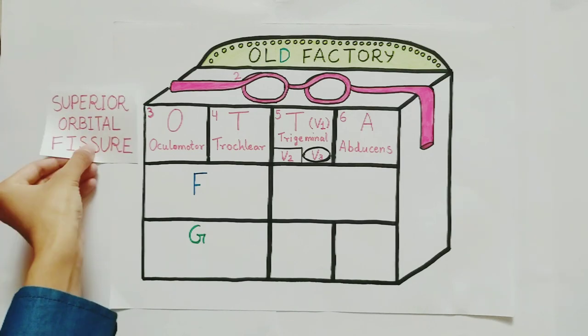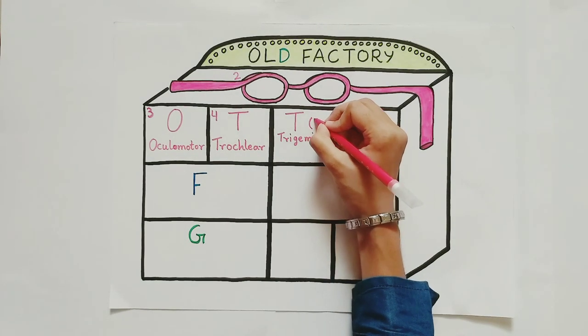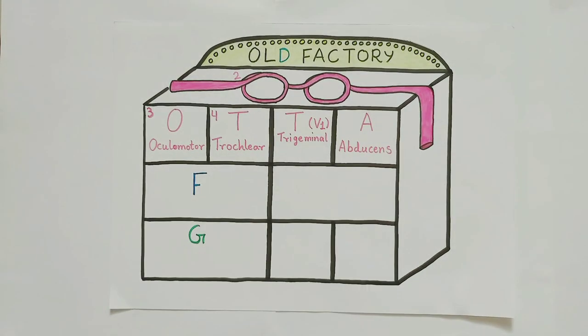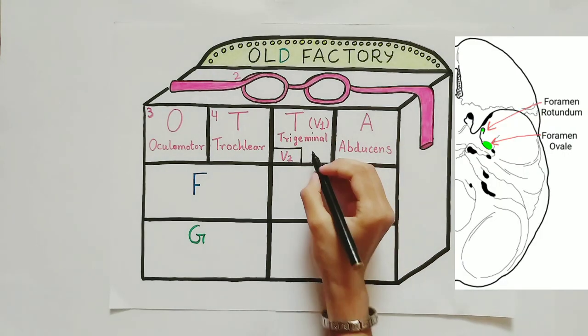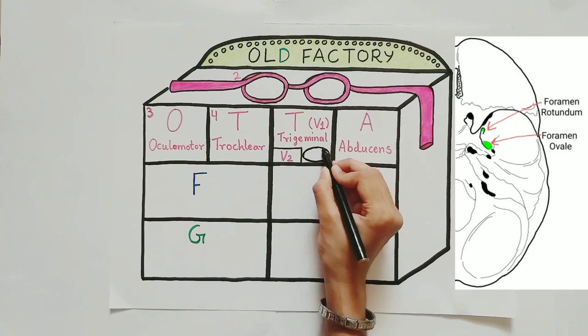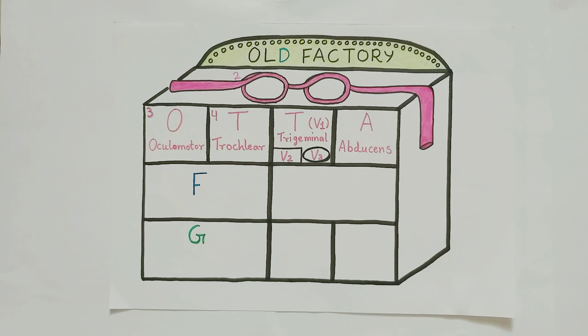But let's go back to the trigeminal nerve, which has three divisions. The ophthalmic branch of trigeminal nerve passes through the superior orbital fissure. Whereas the maxillary branch of trigeminal nerve passes through foramen rotundum, and the mandibular branch passes through foramen ovale, which is why I drew a rectangle for foramen rotundum and an oval for foramen ovale. And that's trigeminal nerve.